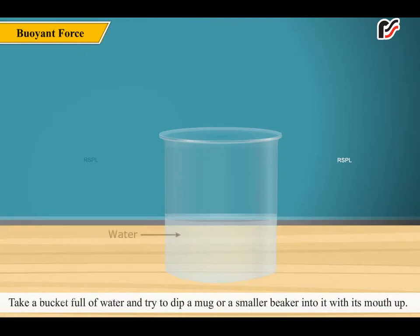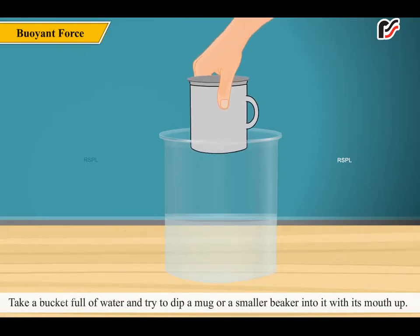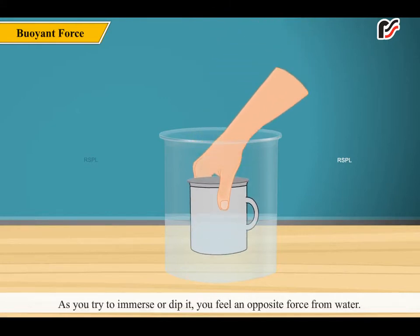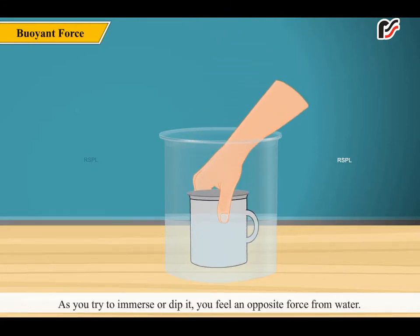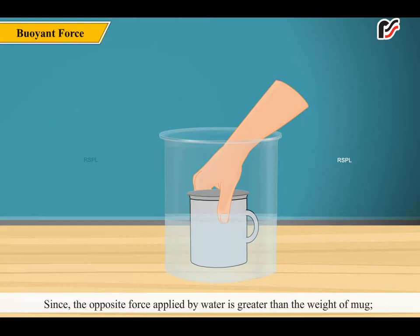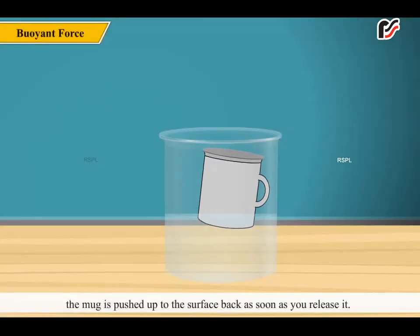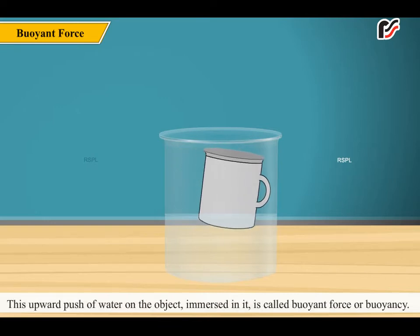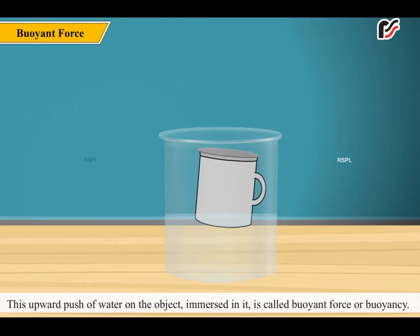Take a bucket full of water and try to dip a mug or a smaller beaker into it with its mouth up. As you try to immerse or dip it, you feel an opposite force from the water. Since the opposite force applied by water is greater than the weight of the mug, the mug is pushed up to the surface as soon as you release it. This upward push of water on an object immersed in it is called buoyant force or buoyancy.